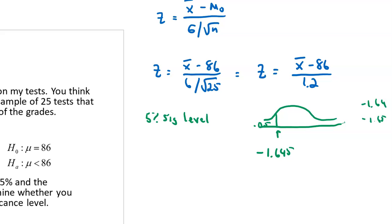Now I need to figure out the Z-score for a sample mean of 83.5. I calculate Z equals 83.5 minus 86, over 1.2. That gives me negative 2.5 divided by 1.2, which equals negative 2.08.